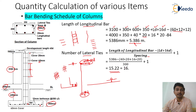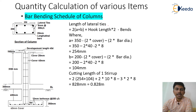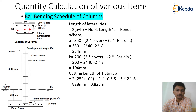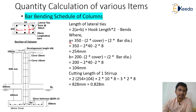Now let us calculate the length of the lateral ties. The formula is: 2(a + b) + hook length × 2 − bends deduction. Here, 'a' is the end-to-end horizontal dimension of the reinforcement and 'b' is the end-to-end vertical dimension of the reinforcement.